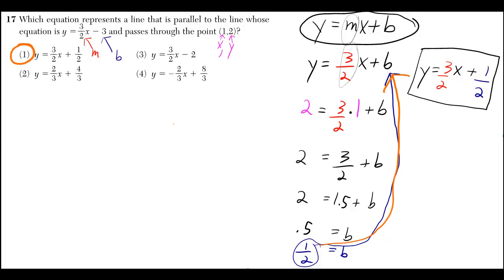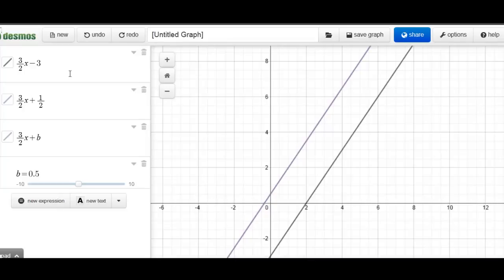But let's take a look at the Desmos graph. So I've already plugged in 3 halves x minus 3 and also 3 halves x plus 1 half, and you can see that they're parallel.